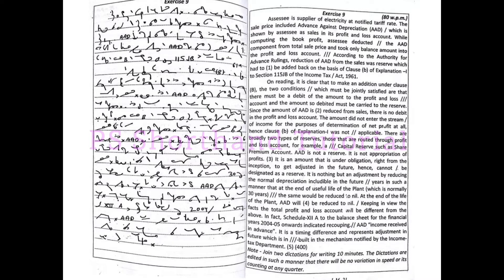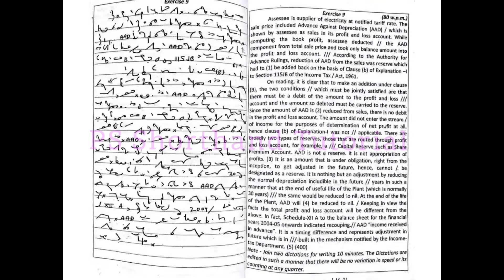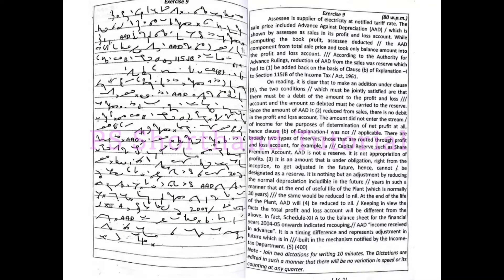It is nothing but an adjustment by reducing the normal depreciation in the future years in such a manner that at the end of useful life of the plant, which is normally 30 years, the same would be reduced to nil.